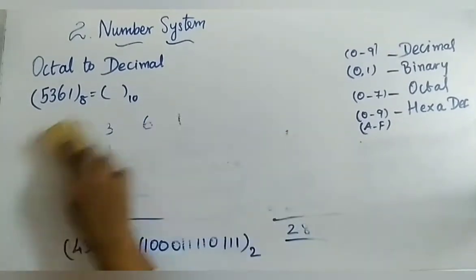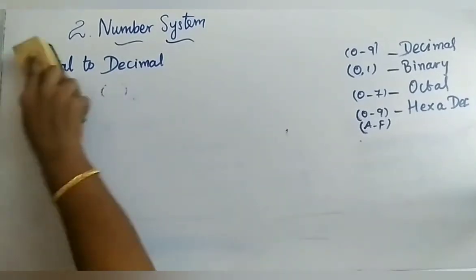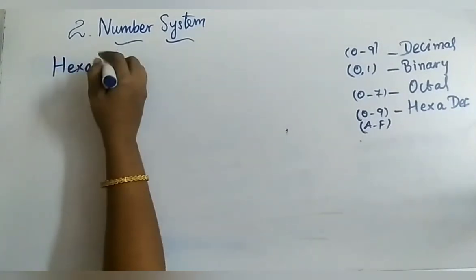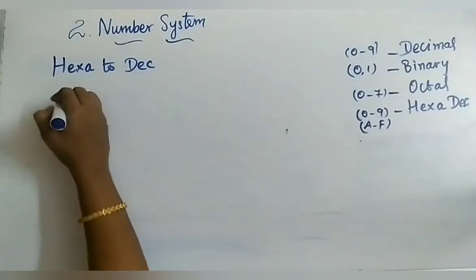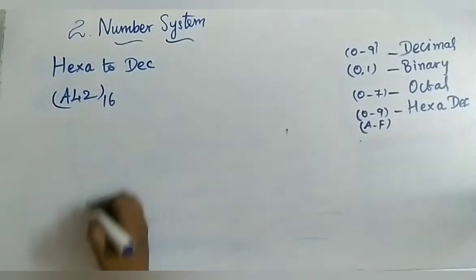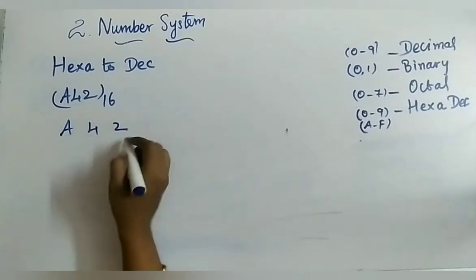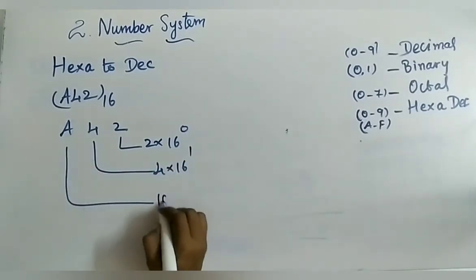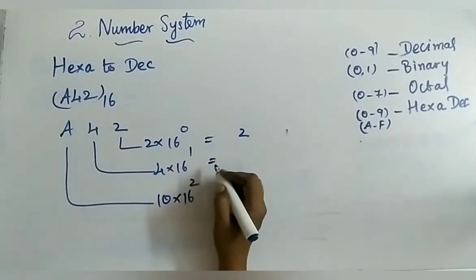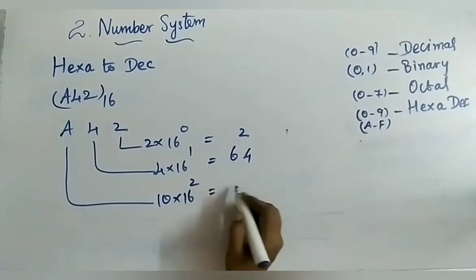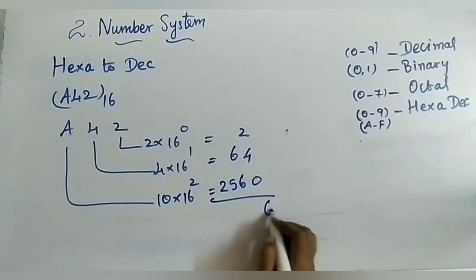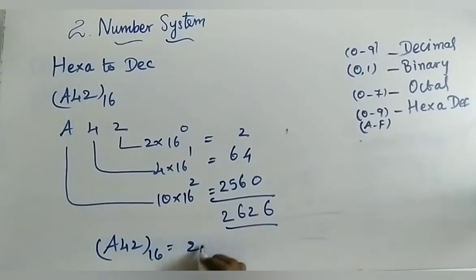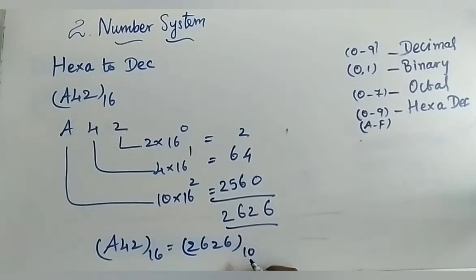Next: hexadecimal to decimal. The number is A42 to the base 16. Compute: 2×16⁰=2, 4×16¹=64, A is 10 so 10×16²=2560. Adding: 2+64+2560=2626. So A42 base 16 equals 2626 to the base 10.